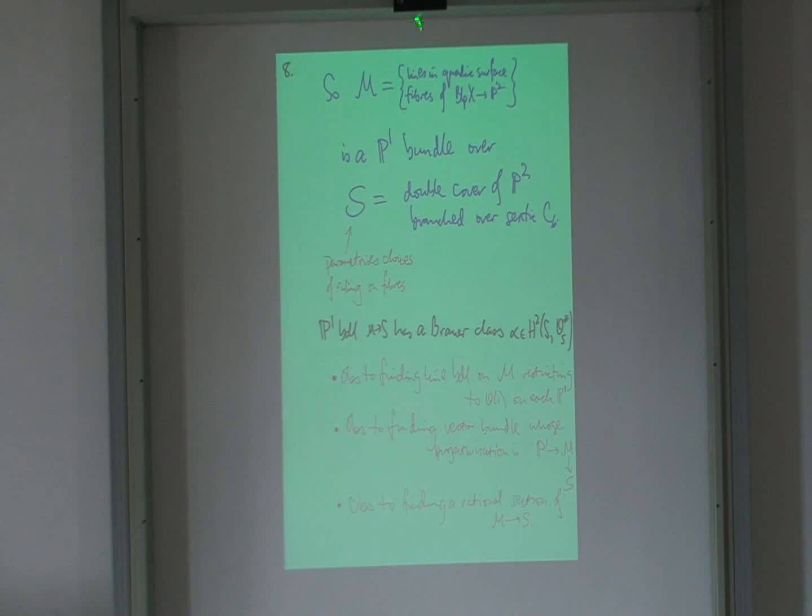Okay, so I naturally have a P1 bundle over that. M is naturally a P1 bundle. Okay? And then this isn't quite a K3 surface because really it's a K3 surface of the Brauer class. So this P1 bundle over the K3 surface may or may not be the projectivization of a vector bundle, a rank 2 vector. And the Brauer class is the obstruction to that.